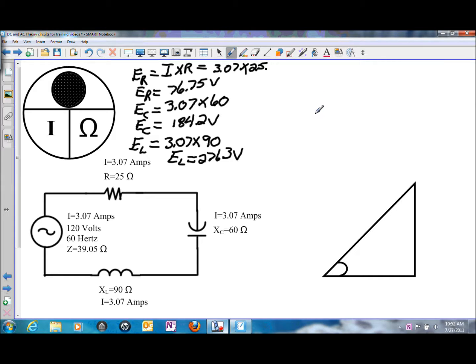Looking at the sides of the triangle or building what's called a lazy T, the adjacent side is going to be the resistive voltage of 76.75 volts, and we can place that here also.